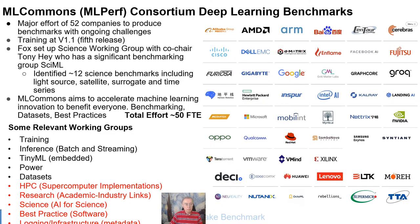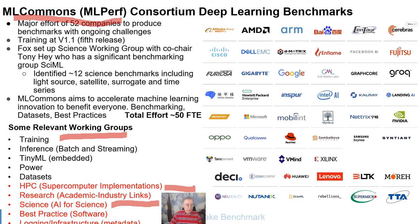ML Commons is a quite impressive organization. It actually used to be called MLPerf, and MLPerf is now a component of ML Commons. It has 52 companies whose logos are given here, and it has a whole set of working groups, including Science, which is the one we're going to be most directly involved with, but a very similar one, the HPC Working Group, which also does science benchmarks but with a focus on the computer, not on the science. The core of MLPerf is training and inference, and also embedded or IoT systems. They also look at PAR issues, and they also produce datasets.